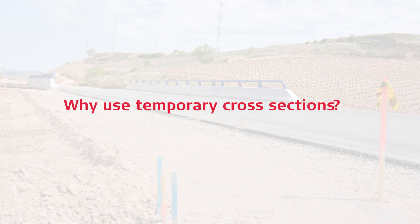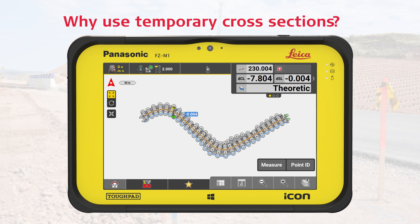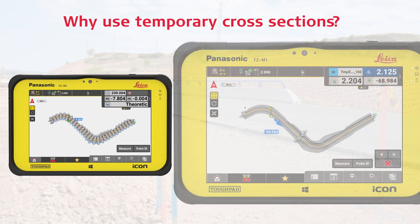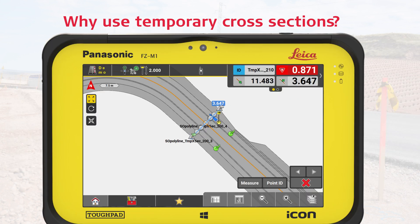Why do we create the cross-sections only temporarily and not permanently? The benefit of the temporary mode is to have a clear map that is not overloaded with excessive data that is currently irrelevant. Instead, we focus on the current active cross-section which we want to stake out. As we mark points on this cross-section, we can immediately identify any differences between the constructed road and the design road.